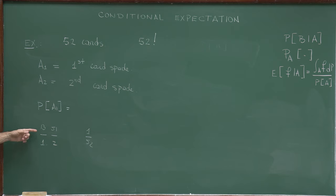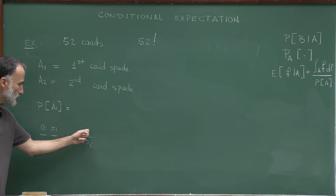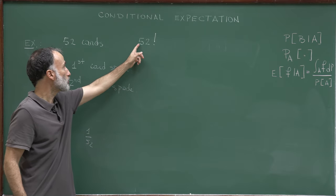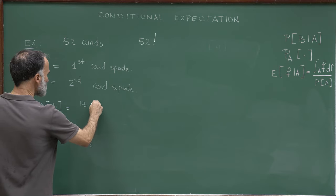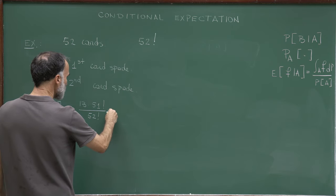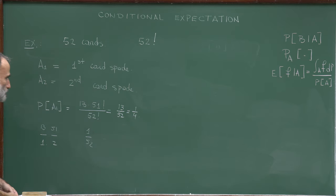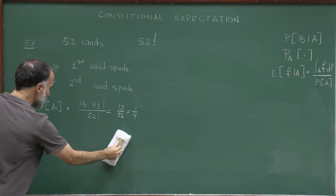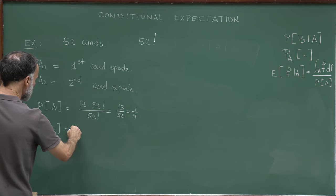For the same reasons, P(A2) = 1/4 as well. We can also compute P(A1 ∩ A2): we want both the first and second cards to be spades. In the first pick there are 13 possibilities, in the second only 12 spades remain, and then 50 remaining cards for the rest. So P(A1 ∩ A2) = 13 × 12 × 50! / 52! = (1/4) × (12/51).